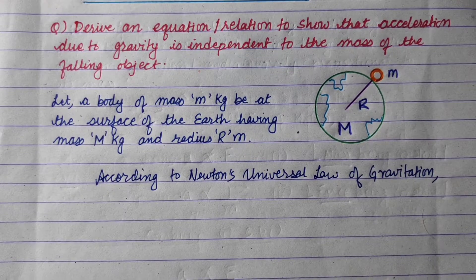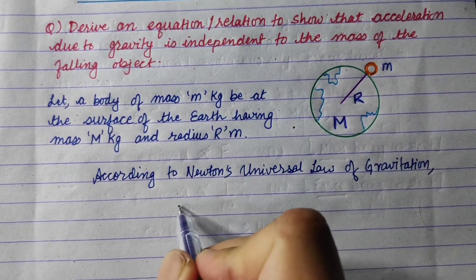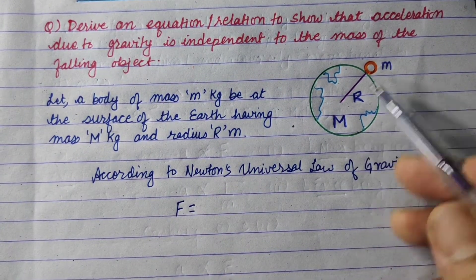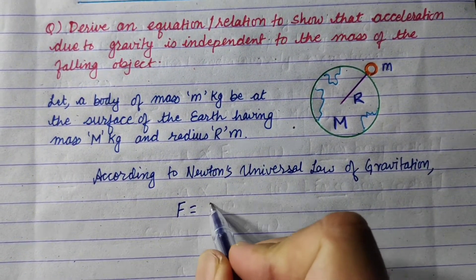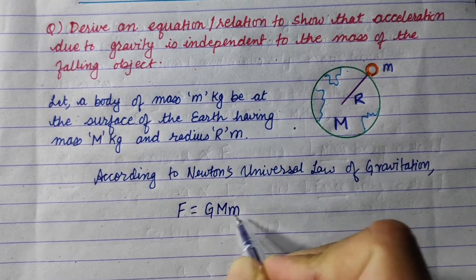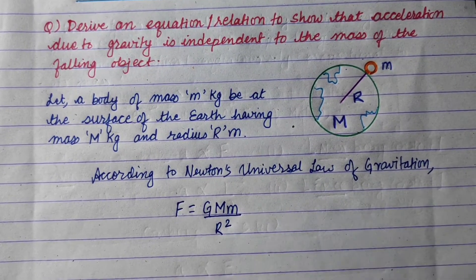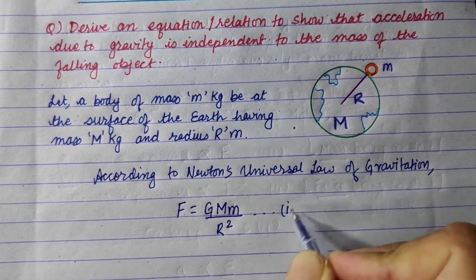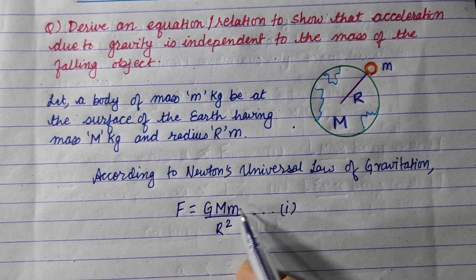According to Newton's universal law of gravitation, the gravitational force of the earth on the object is given by the formula: F equals capital G times capital M times small m upon r square.